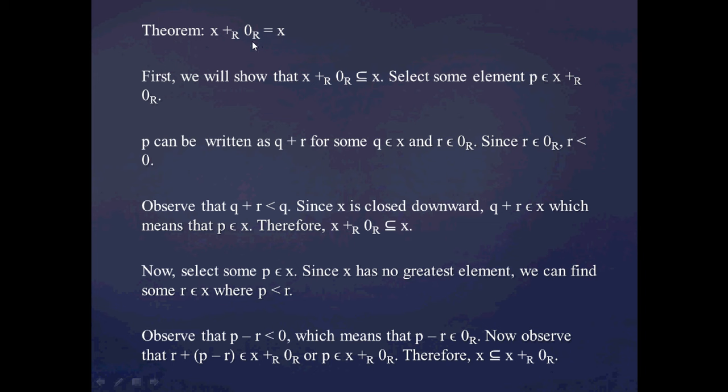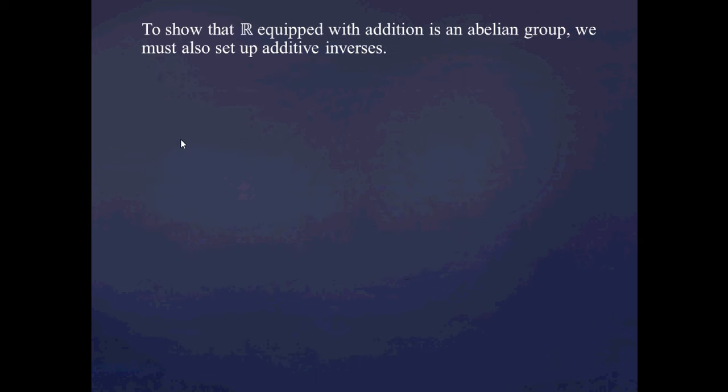Now I've shown both inclusions — x plus zero is a subset of x, and x is a subset of x plus zero — so that shows equality: x plus zero is indeed x, and zero as I've defined it is the additive identity. Ultimately, what we want to show is that the set of real numbers equipped with addition forms an abelian group. So far we have closure, the commutative and associative laws, and the additive identity. The last thing we need is an additive inverse.